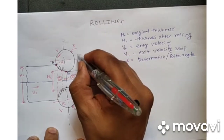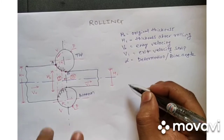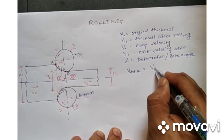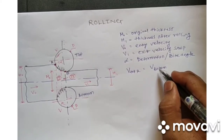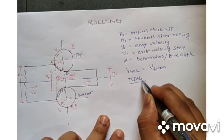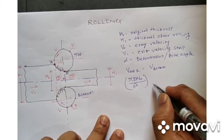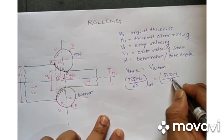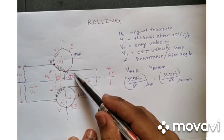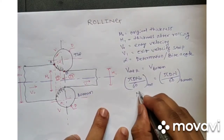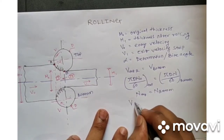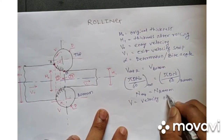The two rollers should rotate at the same velocity so that the strip can be pulled properly. This is the top roller and this is the bottom roller, so the velocity of the top roller should equal the velocity of the bottom roller. This surface velocity can be calculated as pi times the diameter of the roller times rotational speed divided by 60. The diameter of the two rollers should be the same, so V_top equals V_bottom. Let's consider V as the surface velocity of the rollers.